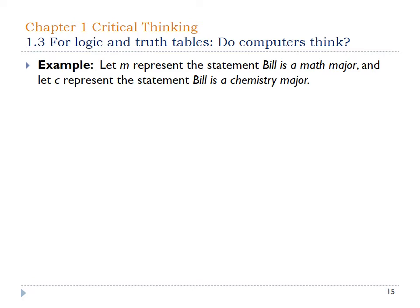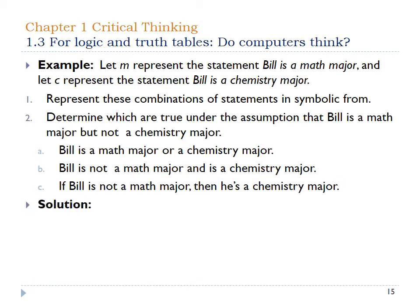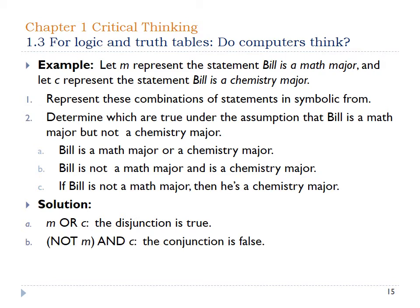Let's make Bill a math major, and let's say Bill is actually a chemistry major. Bill is a math major or a chemistry major — M or C — this disjunction is true, because he can be a math major or a chemistry major. Bill is not a math major and is a chemistry major — this would be false, because the conjunction requires both to be true. If Bill is not a math major, then he is a chemistry major — this is true because the premise is false, and since the premise is false, the conditional is true.